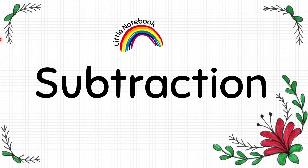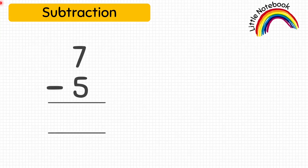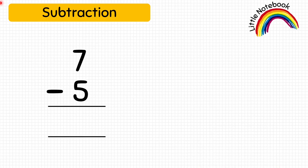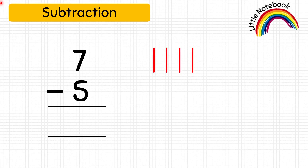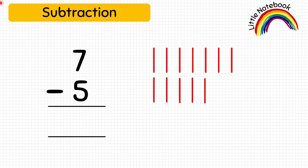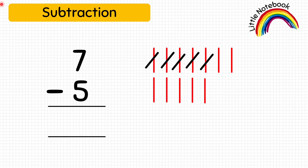Now our last worksheet is vertical subtraction of numbers without pictures. For example: seven minus five equals how much? You can represent seven as seven tally lines — one, two, three, four, five, six, seven — and then draw five lines to represent number five. To subtract, let's cross out five lines from the seven — one, two, three, four, five. We are left with only two lines, so the answer is two. Seven minus five equals two.